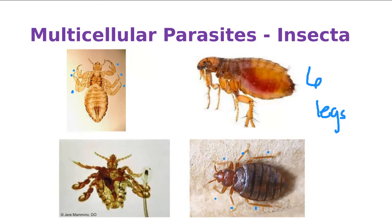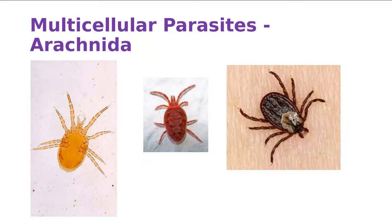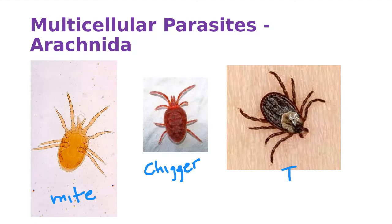Then we're going to look at the Arachnida. This is a mite. This is also a mite, but we call it a chigger. How many people have ever had chiggers? And of course, this is our friend the tick.